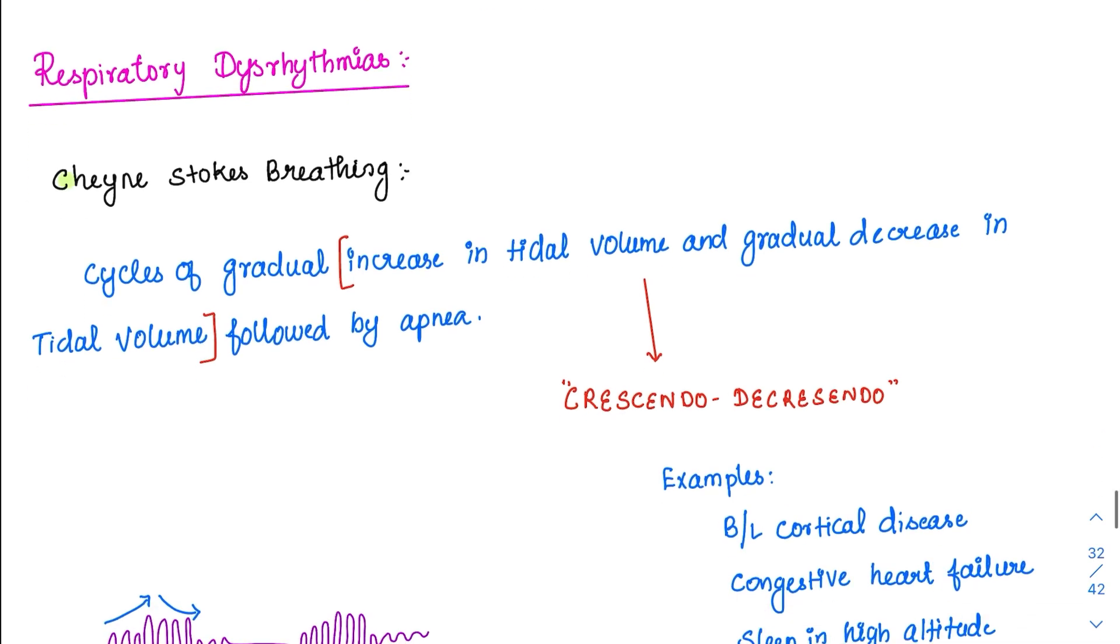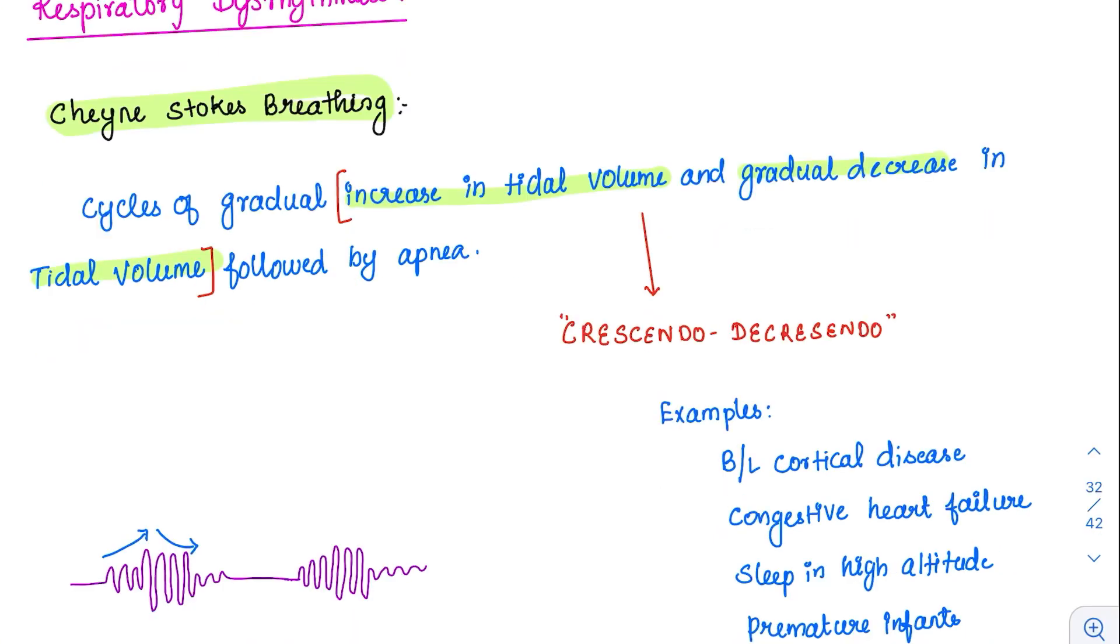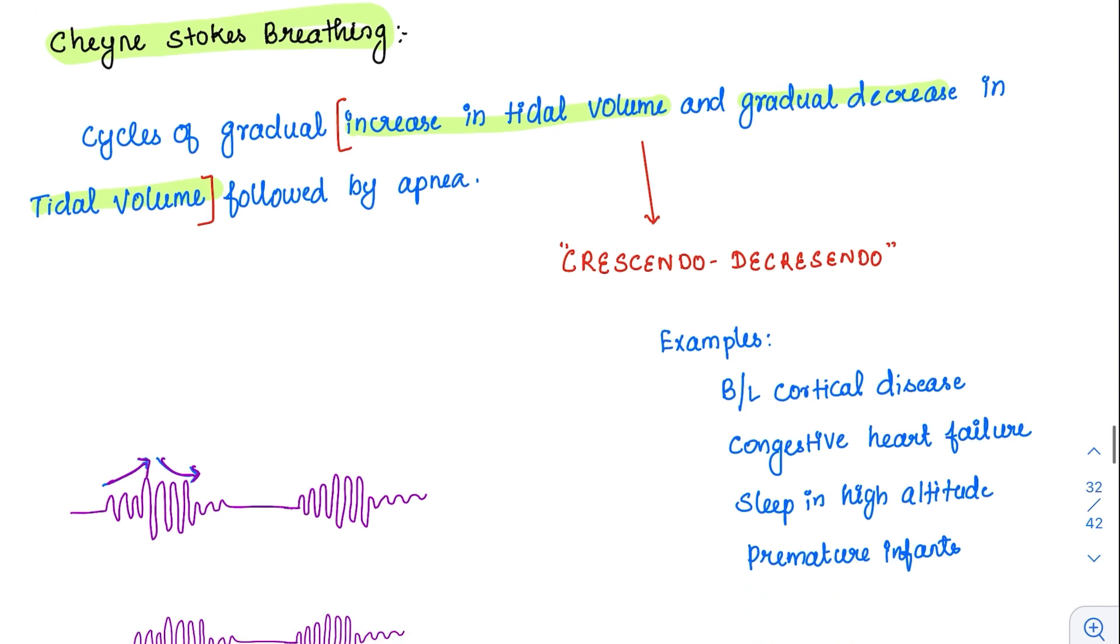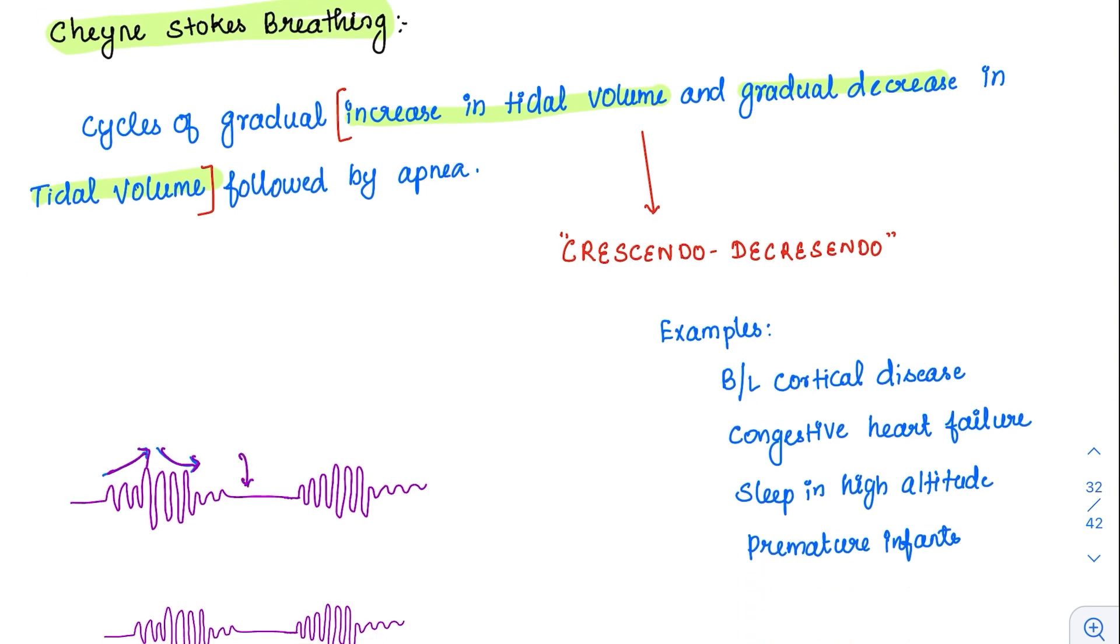One is Cheyne-Stokes breathing, another one is Biot's breathing. What is Cheyne-Stokes breathing? There are cycles of increase in tidal volume and gradual decrease in tidal volume. The tidal volume keeps on increasing and finally it keeps on decreasing. This is the tidal volume increasing and decreasing, followed by a period of apnea.